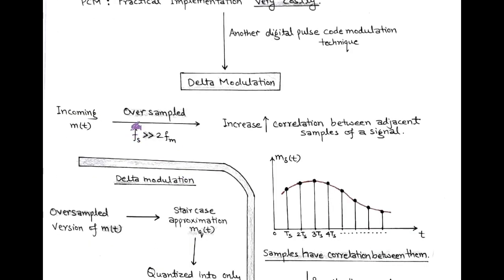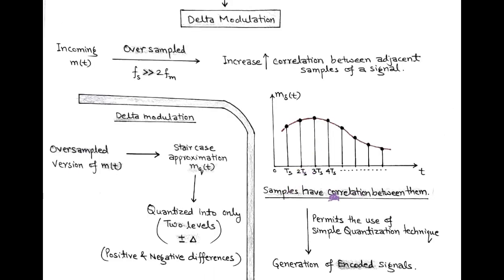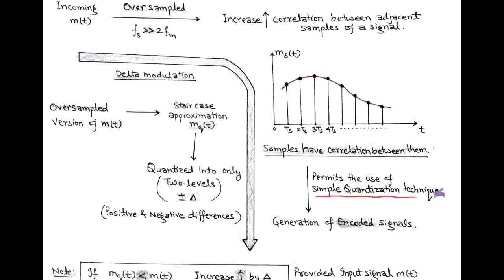In Delta Modulation, the incoming modulating signal m(t) is oversampled. That is, the sampling frequency FS is far greater than twice FM. This oversampling increases the correlation between adjacent samples of the discrete signal, as shown in the figure. The samples at adjacent sampling instants TS, 2TS, 3TS are correlated with each other, and this permits the use of a simple quantization technique. Correlation between different samples means the signal does not change rapidly from one sample to the next.